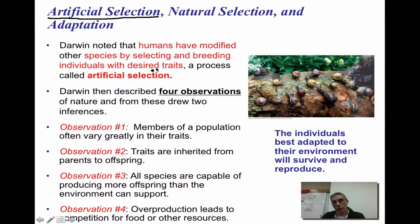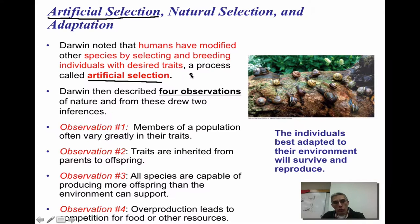What's interesting about natural selection is that we can also note something called artificial selection, which is basically something humans have been participating in for a long time. Darwin noted that humans have modified other species by selecting and breeding individuals with desirable traits. If you think about animals like dogs, cats, cows, pigs, sheep, or even different types of crops, what we do is look for the best producers and artificially select them to produce future generations. It's very similar to natural selection, only we are controlling which organisms are used.